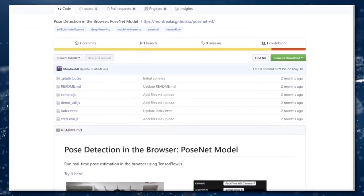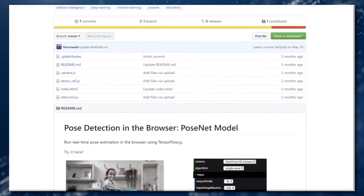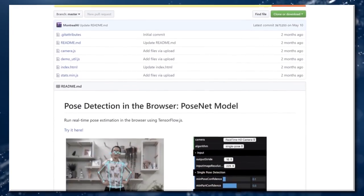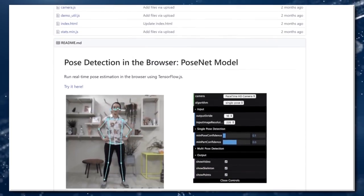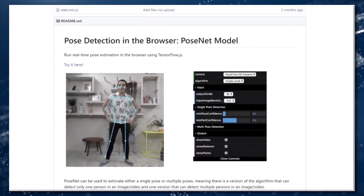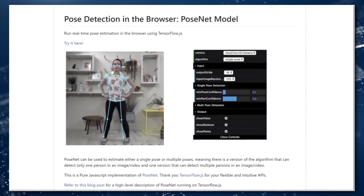One in particular that caught my attention was the webcam-based PoseNet model. It uses a pre-trained neural network to create a real-time pose estimate of any human it sees.